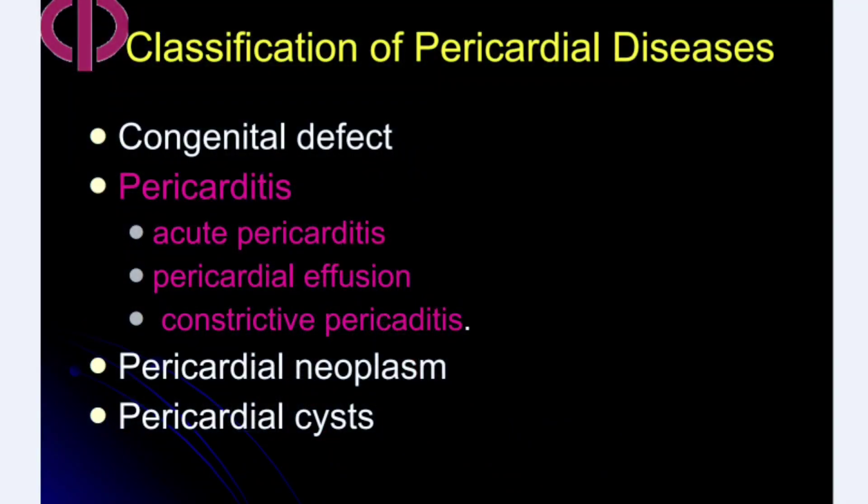Pericardial diseases can be broadly classified into congenital defects, pericarditis, pericardial neoplasms, and pericardial cysts. Congenitally, there may be complete absence of the pericardial sac or regional defects in the pericardium.